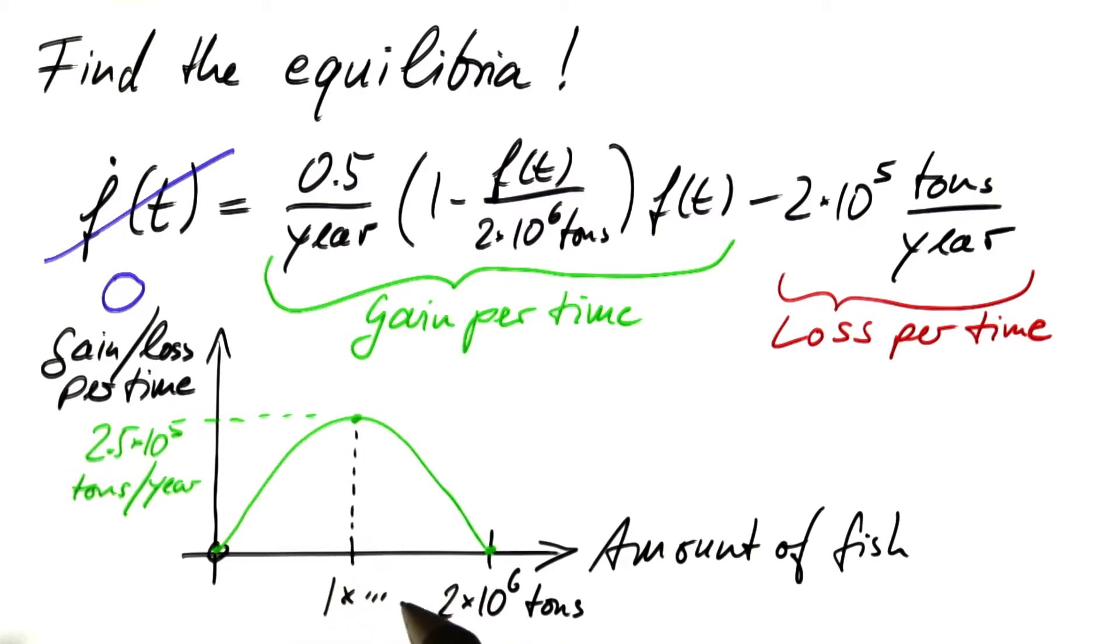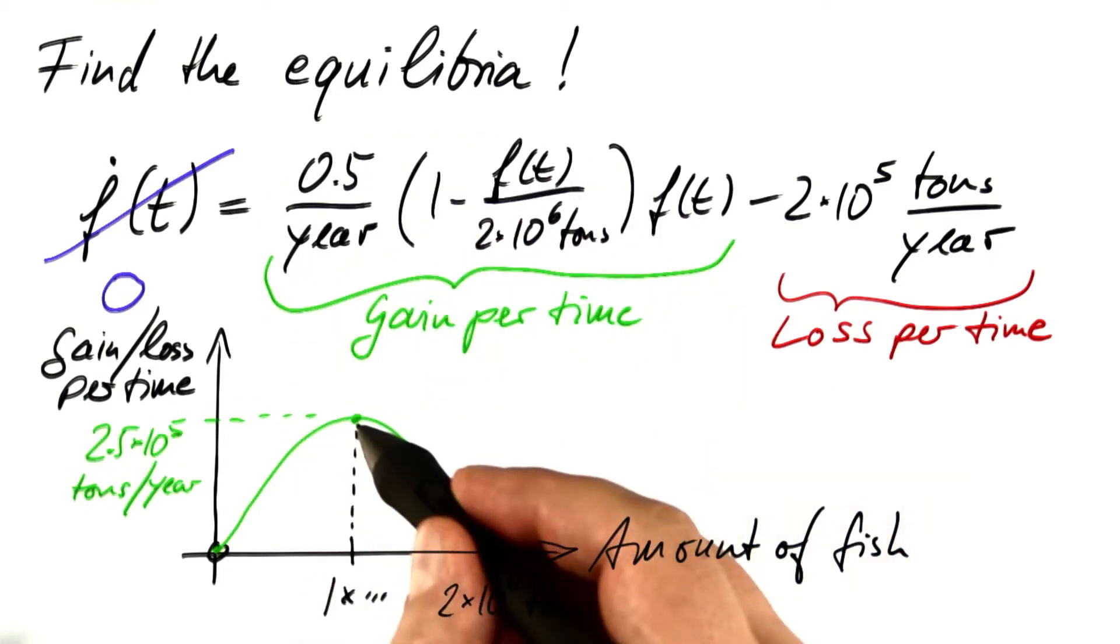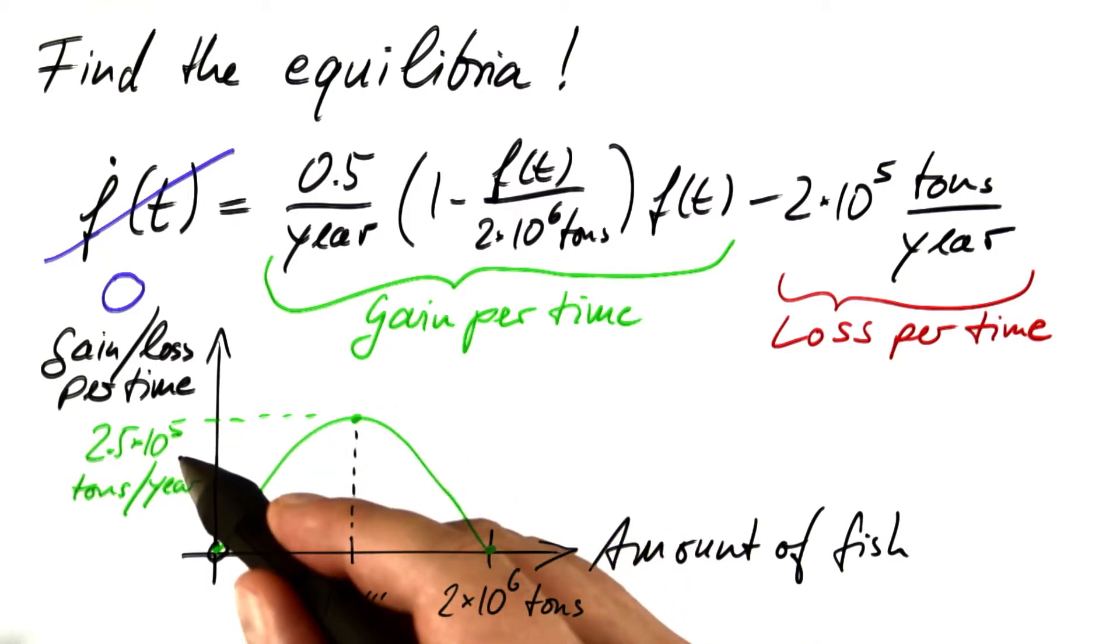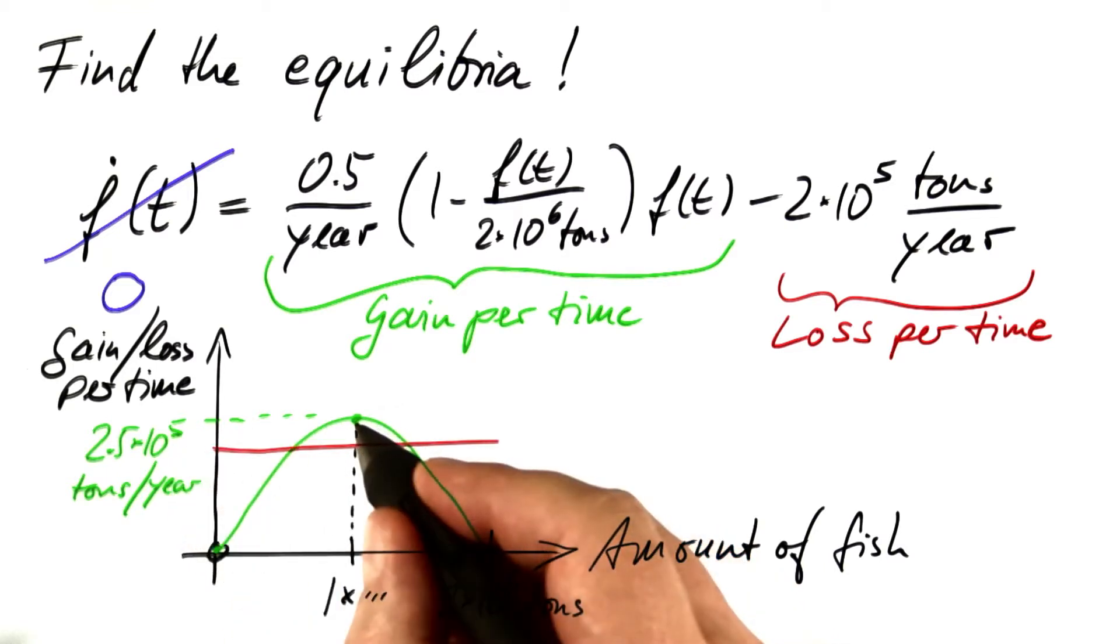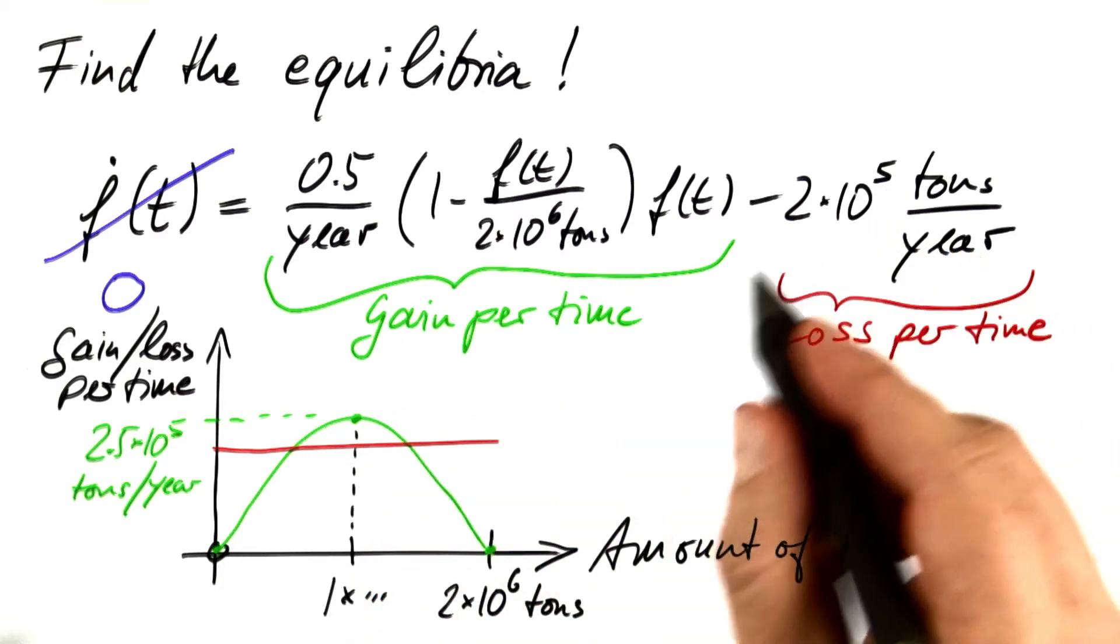You can plug this value, 1 million tons, into this expression and get that the gain here is 2.5 times 10 to the 5 tons per year, which is a little more than the loss, which is 2 times 10 to the 5 tons per year.